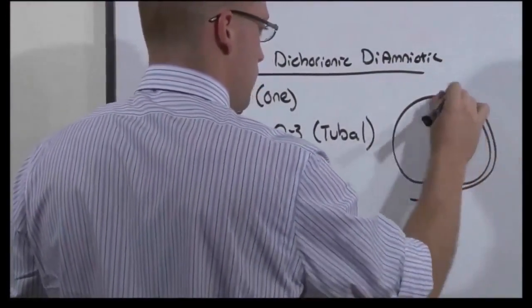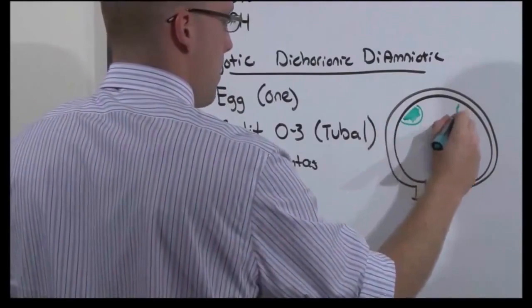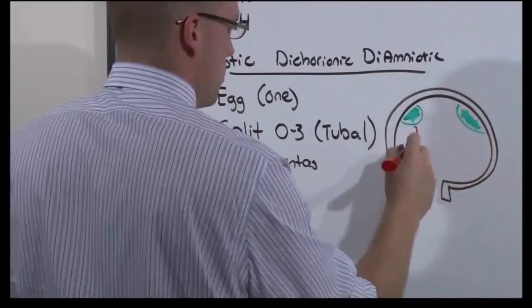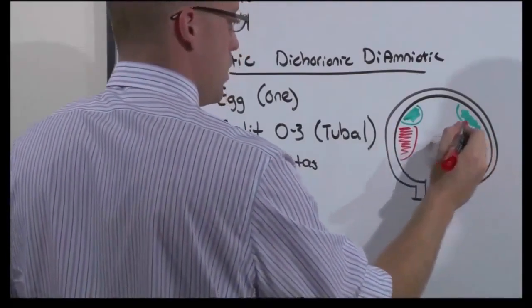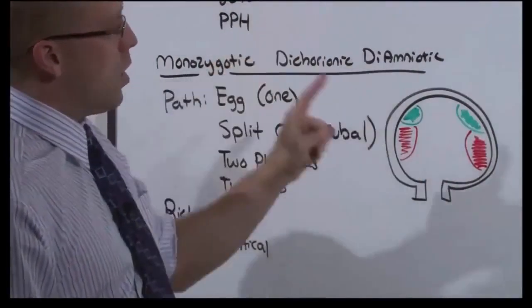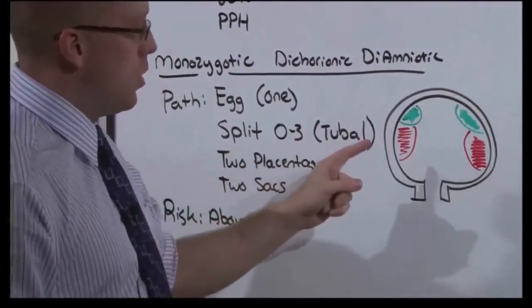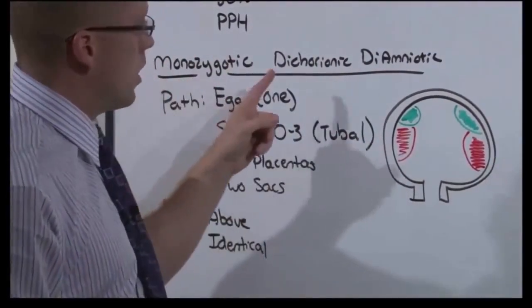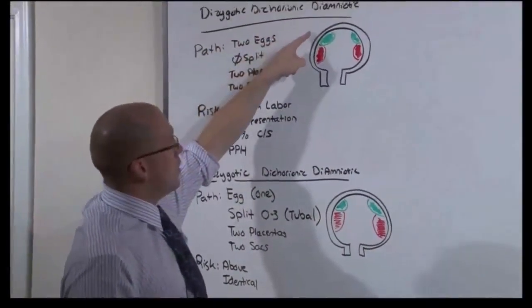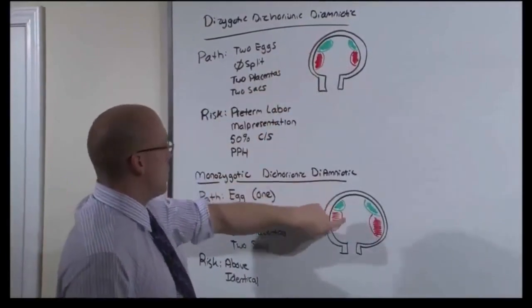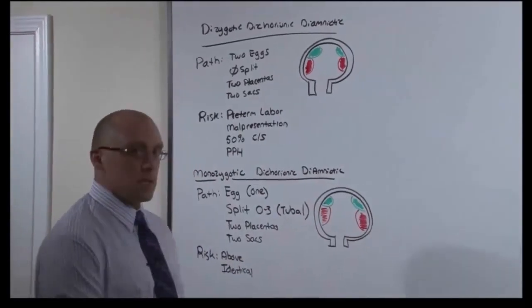Here's what they look like. There's going to be two placentas and two sacs with fetuses growing in them. Hopefully you can see that the two pictures are almost identical. The only difference is in the genetic material, which is why if you had a monozygotic, dichorionic, diamniotic, you have to have the same gender. But if you had a dizygotic, dichorionic, diamniotic that were the same gender, you could not distinguish it from this type of identical twin until they were born.